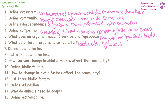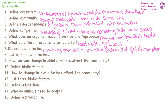Abiotic factors are non-living, chemical or physical components that affect the living organisms and the ecosystem. There are eight different abiotic factors you need to recall: light intensity, temperature, water levels, pH, iron concentration, wind, carbon dioxide, and oxygen.